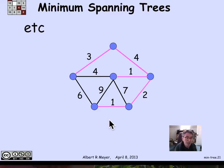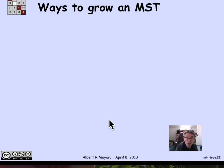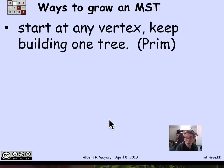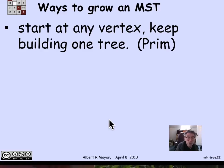There are several ways to grow a minimum weight spanning tree. One way is to start at any vertex, color it black and everything else white, and pick the minimum weight gray edge — which will always be connected to that vertex. You keep working on one growing component, always coloring it one color and everything else the other. This method is known as Prim's algorithm.